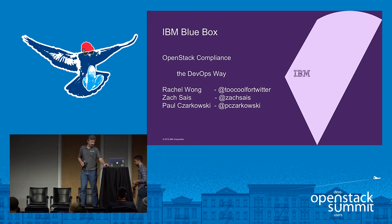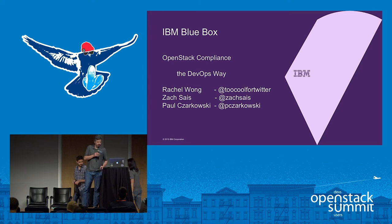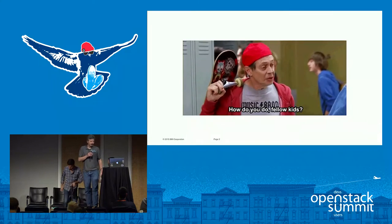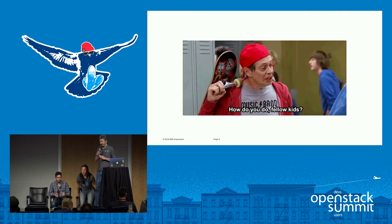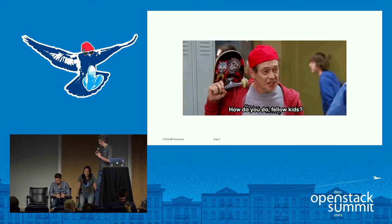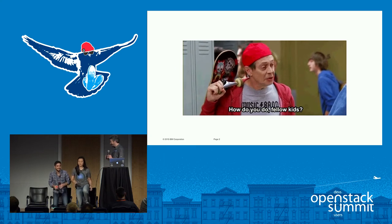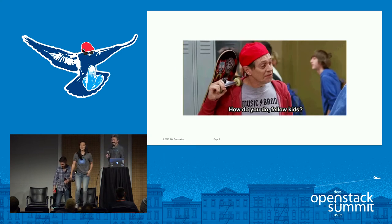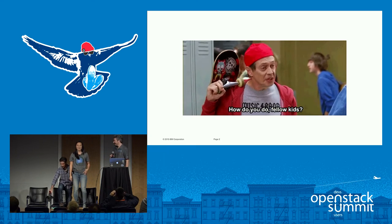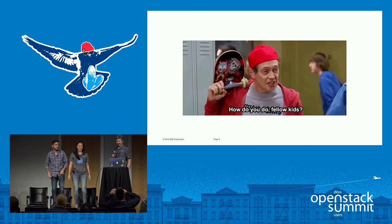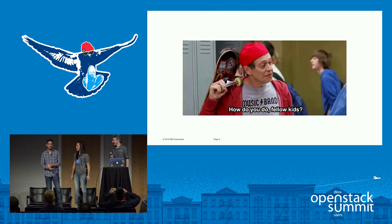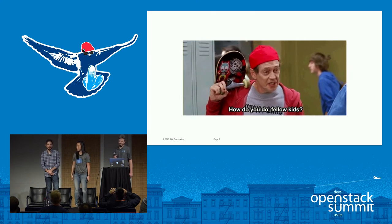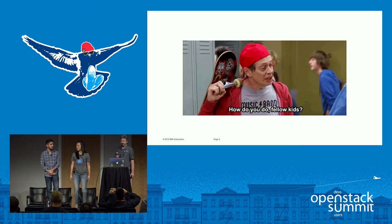Hi everyone. My name is Paul Tchaikovsky, I'm a cloud architect at Blue Box, an IBM company. I'm Rachel, I'm an engineer on the QA automation team. I'm Zachary Seiss, I work on IBM Blue Box.